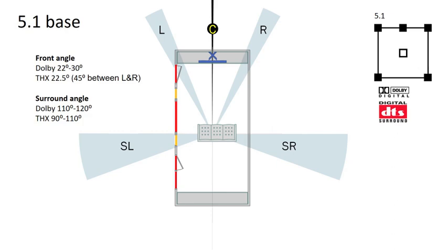Overlaying these values onto my floor plan, we can choose a practical location for the front and surround speakers. For the front channels, placement at 22.5 degrees is possible. But with the surrounds, I need to align slightly past the 110-degree THX guidance due to wall openings.